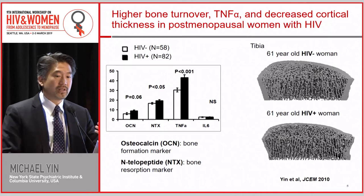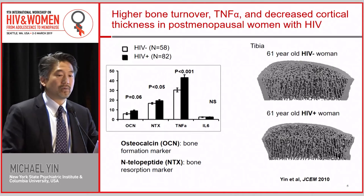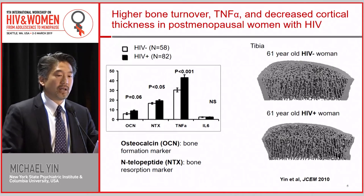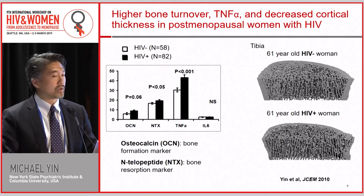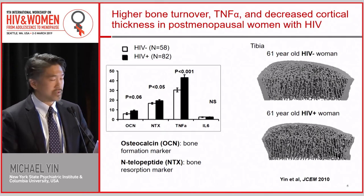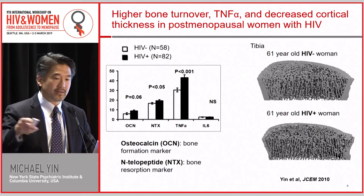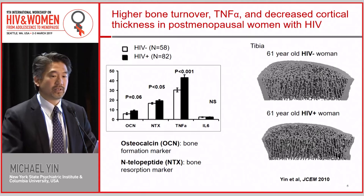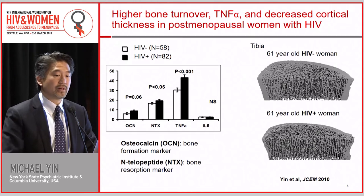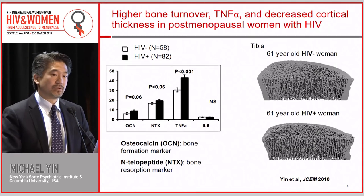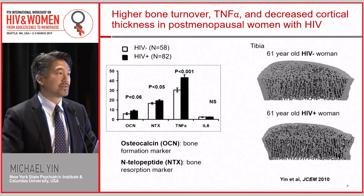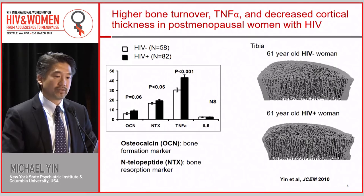We also did a high-resolution CT study, and we found that the cortical thickness — the rind on the side of the bone — was thinner in the women who were HIV-positive versus those who were HIV-negative and similar in age.